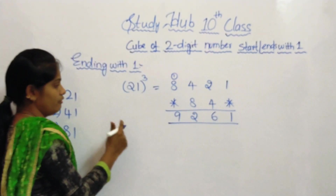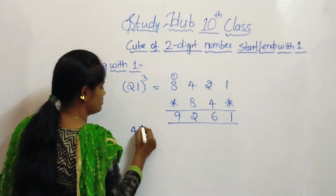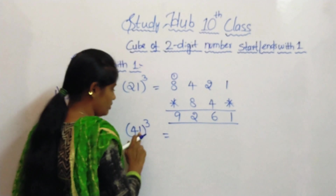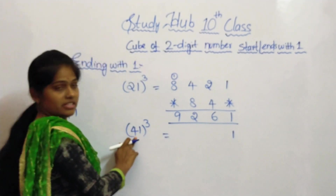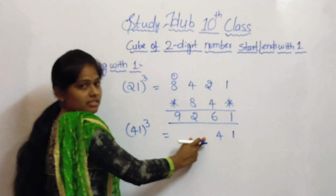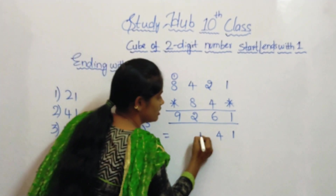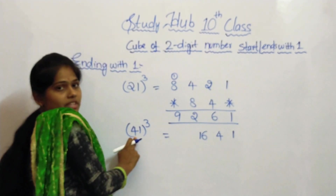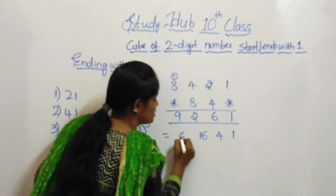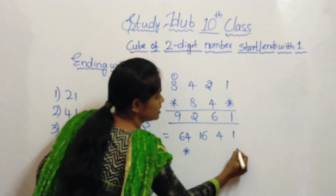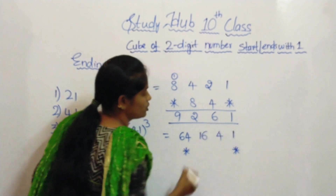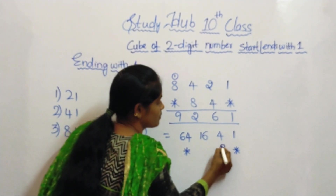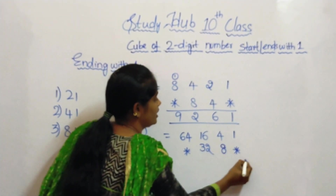Our next example is 41. In the fourth place write 1, and in the third place write 4. In the second place, write the square of 4 — 4 squared is 16. And in the first place, write the cube of 4 — 4 cubed is 64. Now exclude the first place and the fourth place. Take twice of 4 and 16: 4 twos are 8 and 16 twos are 32.